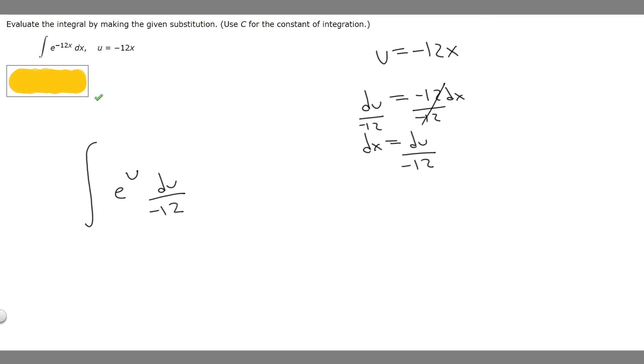So now that we got it like this, what we can do is take the minus 12 and move it out front. So it's just going to become the integral of minus 1 over 12 e to the u du.